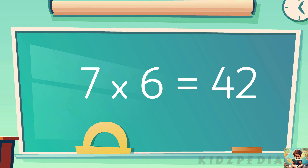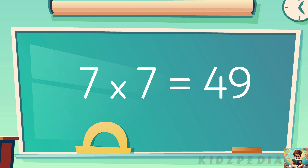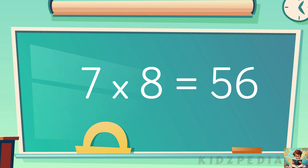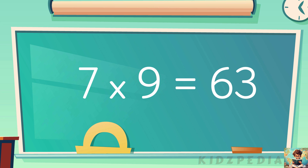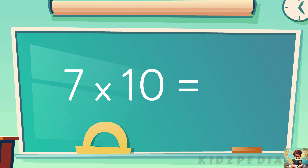7 6s are 42. 7 7s are 49. 7 8s are 56. 7 9s are 63. 7 10s are 70.